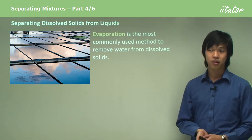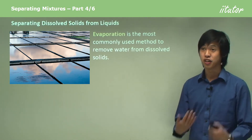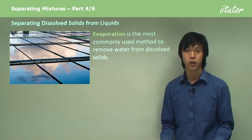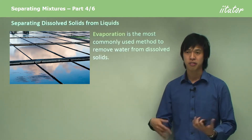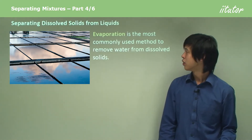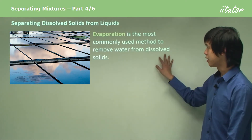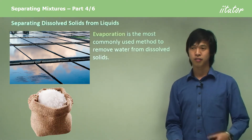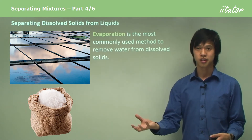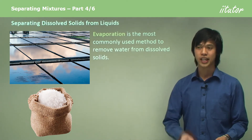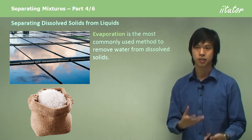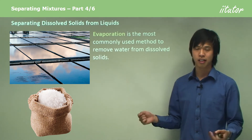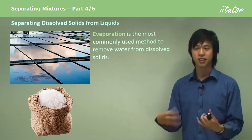What about if we have a dissolved solid? Salt, for example, will dissolve in water. How do we separate those two? Well, evaporation is the most common method — we simply evaporate the liquid from the solid and you're left with the solid. That's how we get table salt from the sea: we take seawater, evaporate all the water, and you're left with salt.